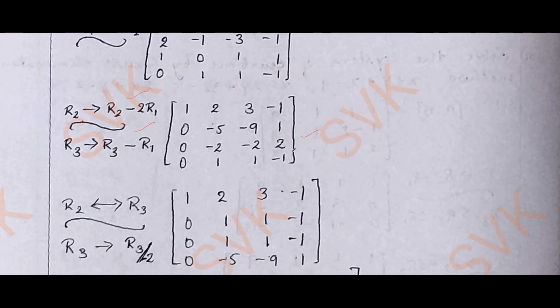Now, as I observe that the fourth row is 0, 1, 1, minus 1, I am going to interchange this row with R2. That is what I have done. R2 changes with R4. Therefore, after changing R2 and R4...